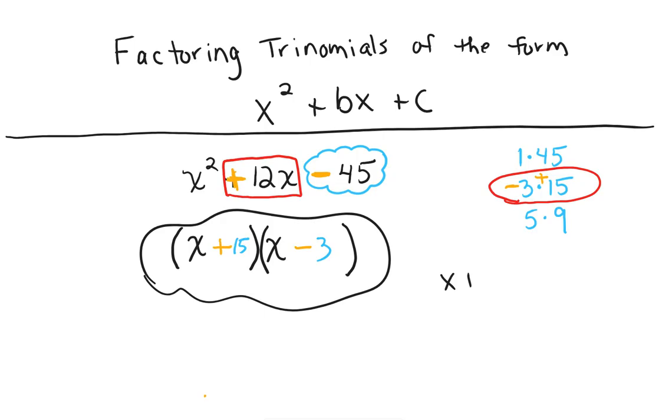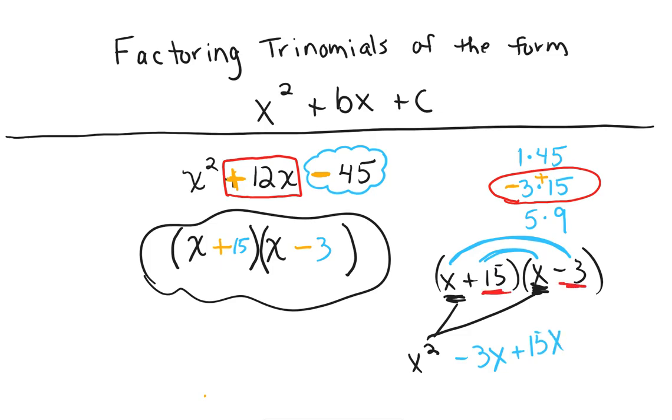And just to show you again, if I wanted to check myself, if I FOIL it, first times first, that is my x squared. If I multiply my outsides, I'd get a negative 3x. If I multiply my insides, there's a positive 15x. And then last times last, positive 15 times negative 3 is a negative 45.